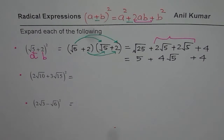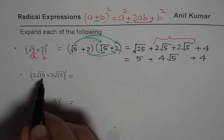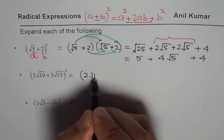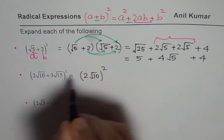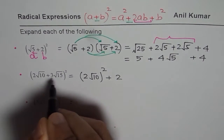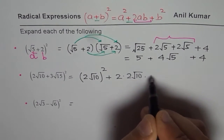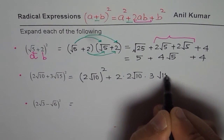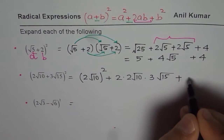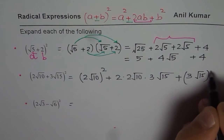You can now do the next ones. Here is my solution for (2√10 + 3√15)². I will write: square the first term — (2√10)² — plus 2 times the first and second term, which is 2 × 2√10 × 3√15, that is the 2ab part, plus square of the last term, which is (3√15)².